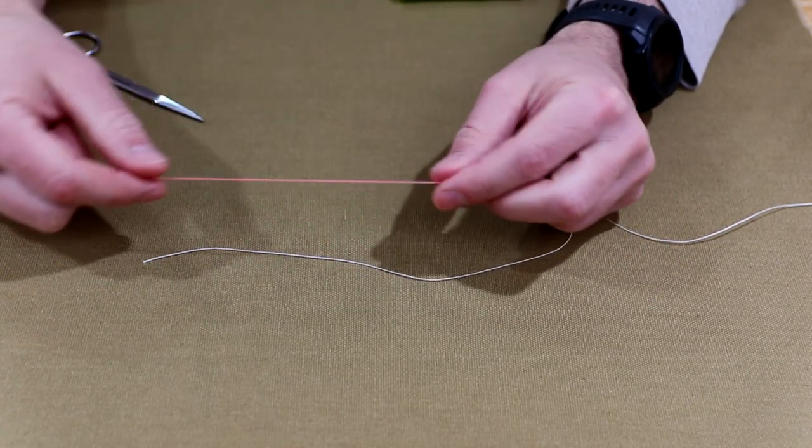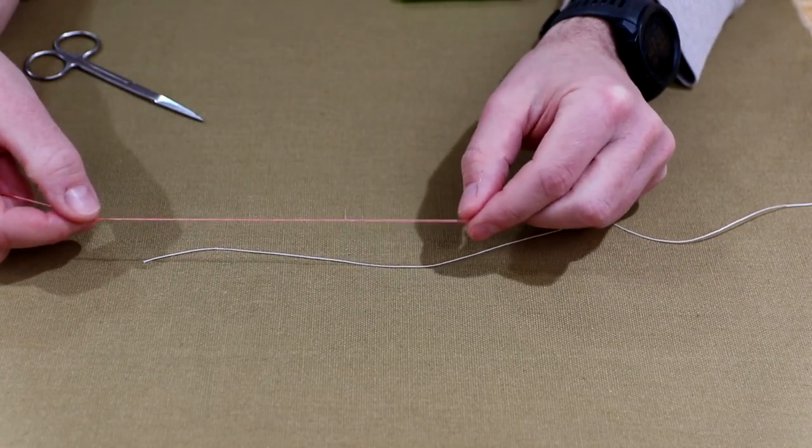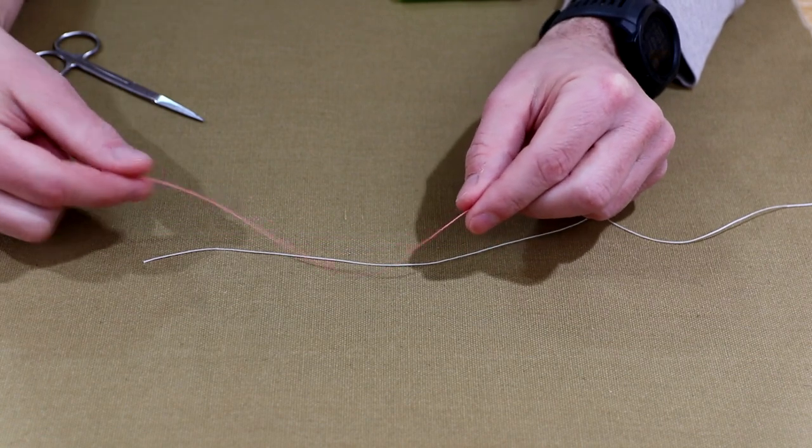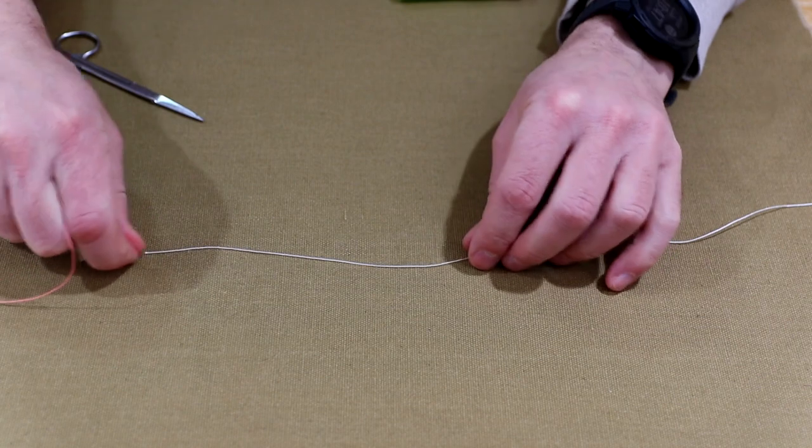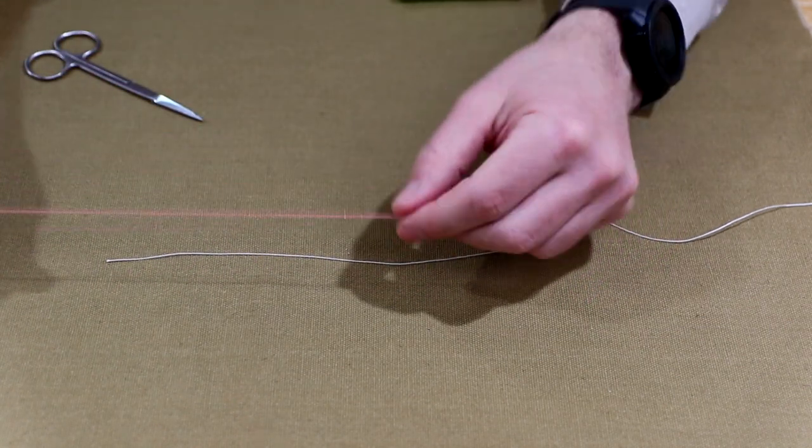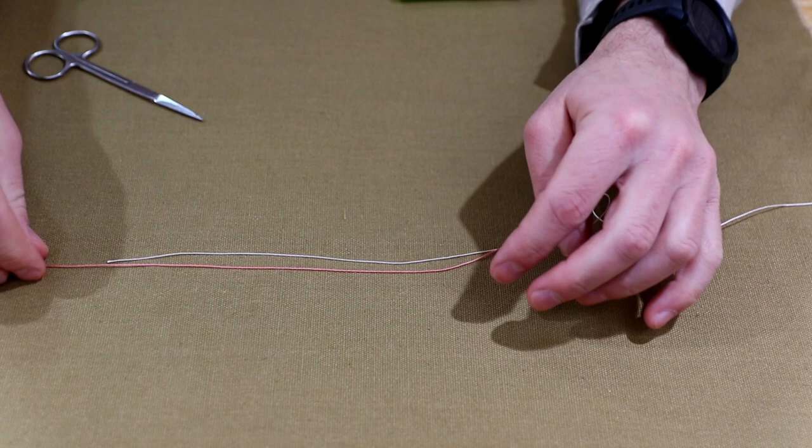Alright, so the surgeon's knot is really easy. I'm going to show you the double and then we'll turn it around again so we can do a triple. Essentially all you're going to do is say this is our leader and we're going to add tippet to it. So we'll put another piece right here.